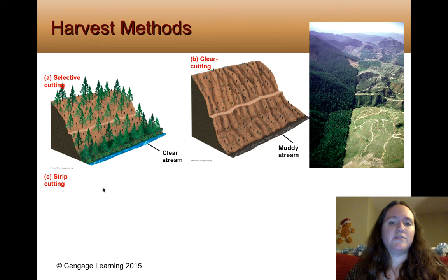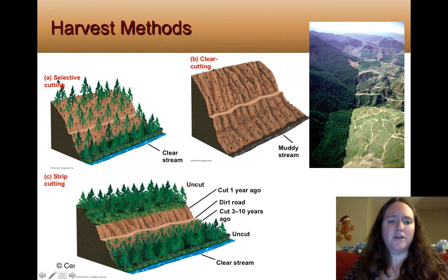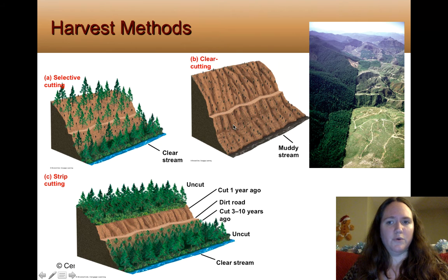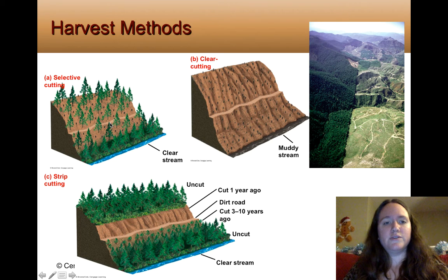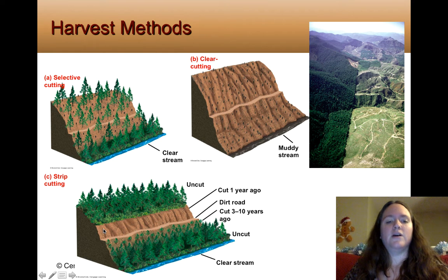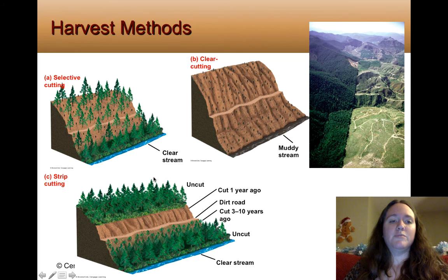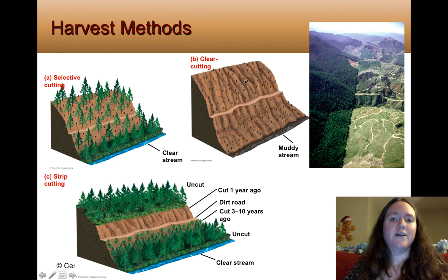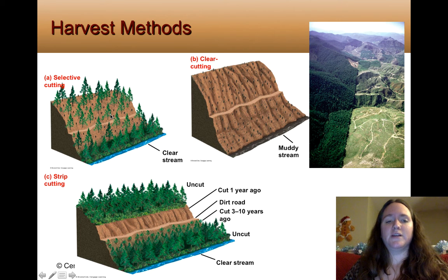Looking at harvesting methods: clear cutting removes everything at once, which is very striking as shown in the picture. Selective cutting means you take out the oldest, a certain type, or sickly-looking trees. Strip cutting is where you alternate — you cut in one strip this year and let other areas grow, then cut a different strip next season. The biggest issue with clear cutting is way more erosion and water pollution, because nothing keeps the soil from washing into the water. Selective or strip cutting are better options.